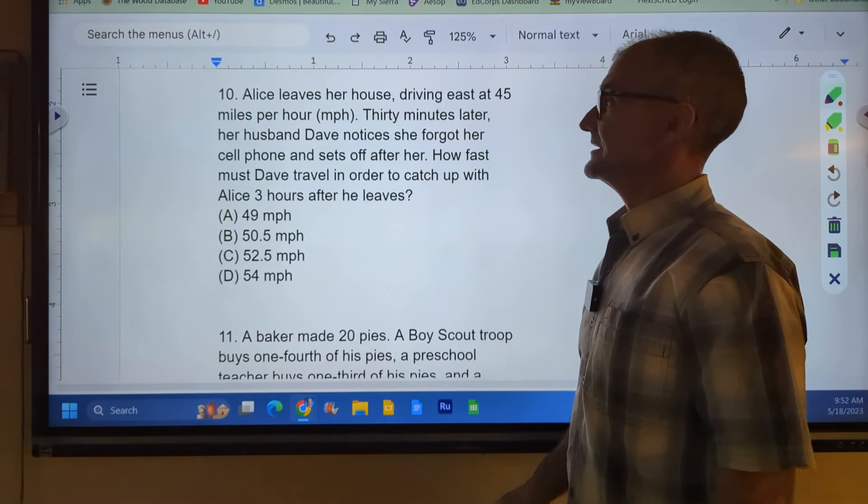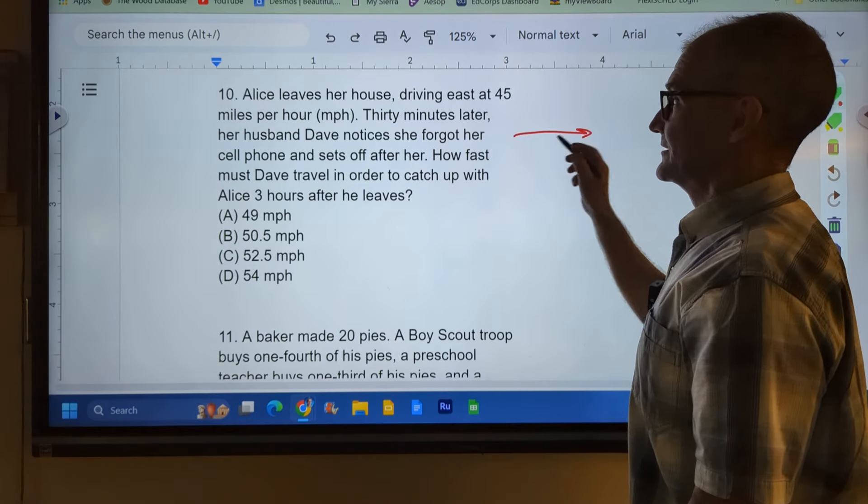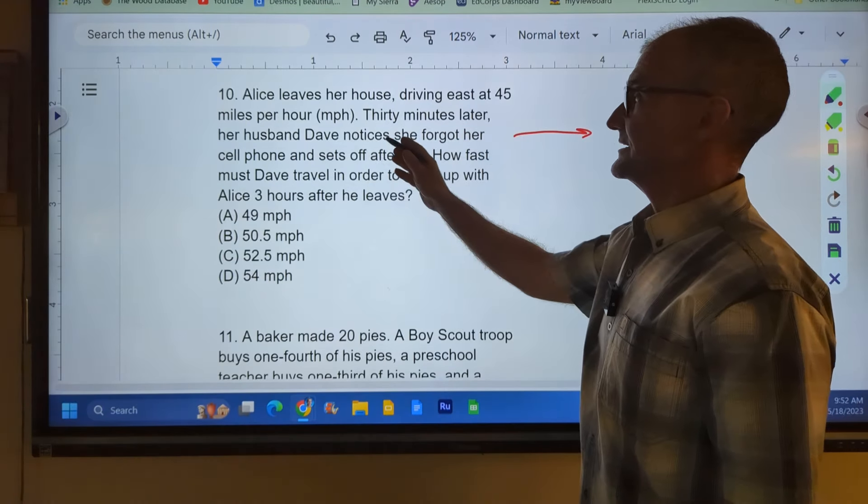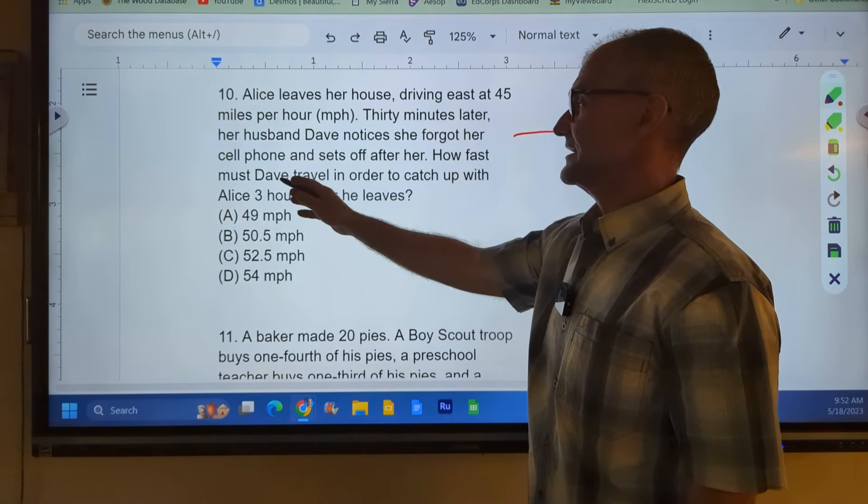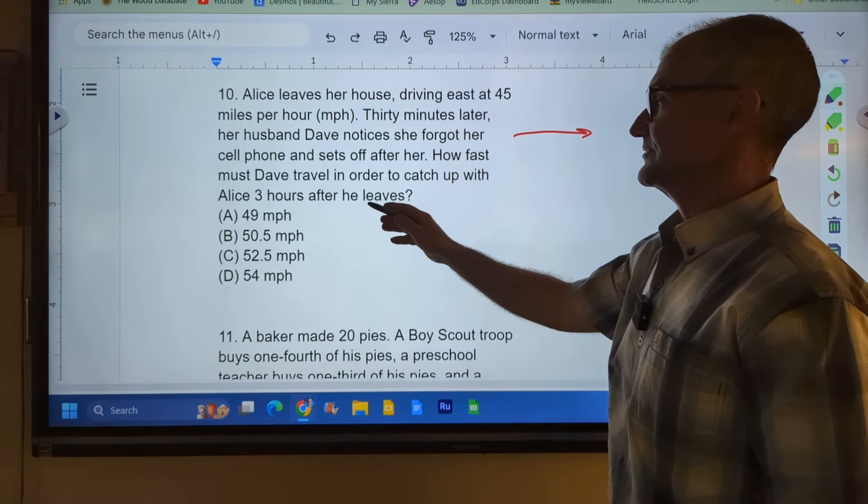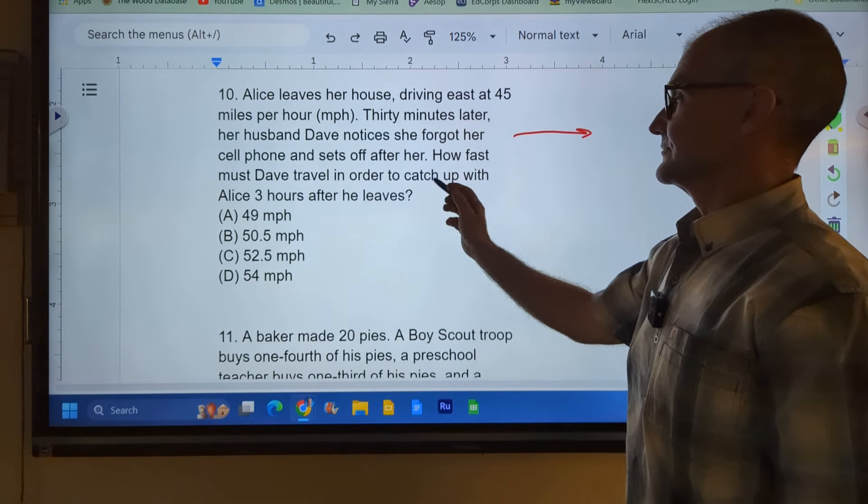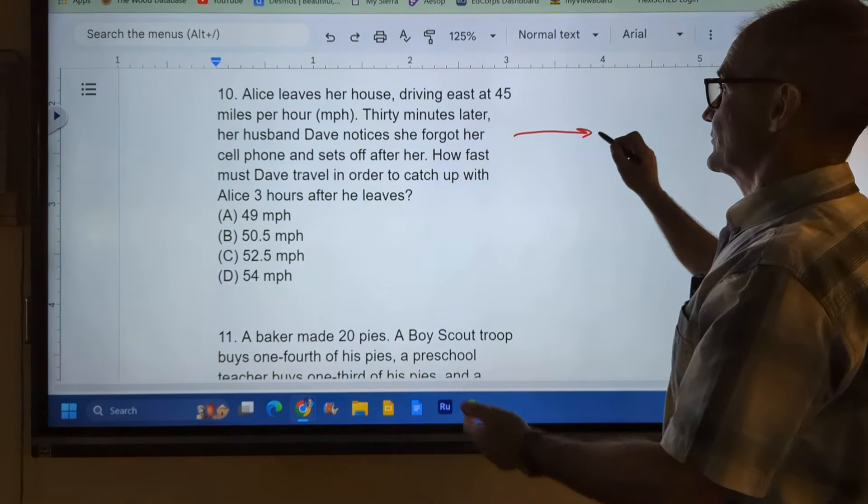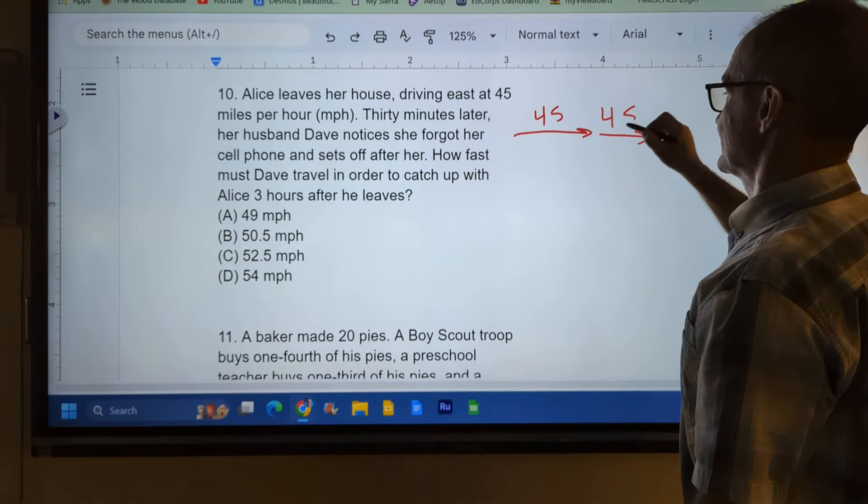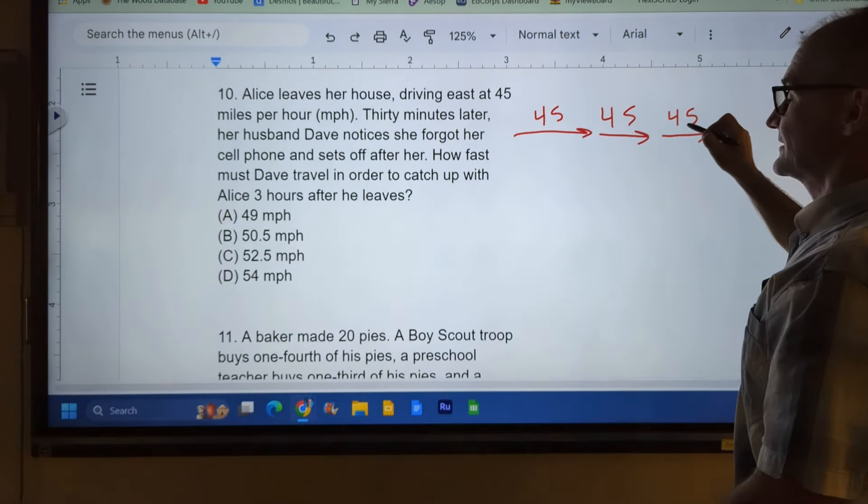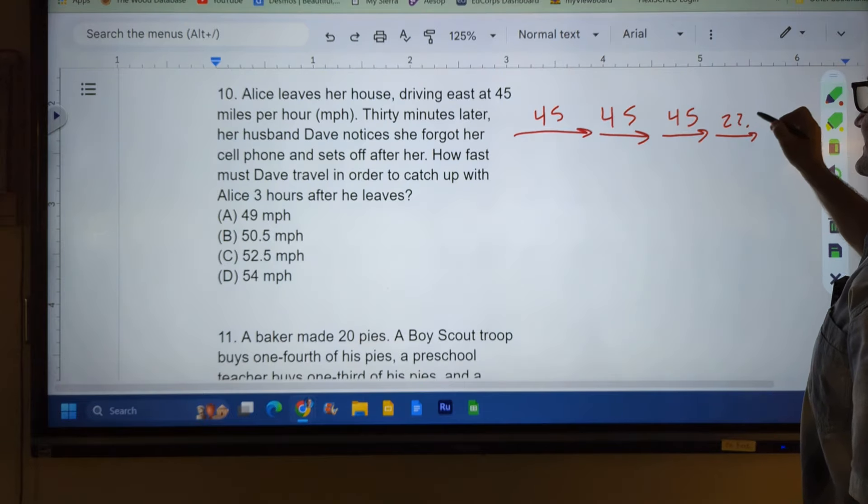All right, let's take a look at number ten here, and I think I'll end it right here. Alice leaves her house driving east at 45 miles per hour. Thirty minutes later her husband Dave notices she forgot her phone and sets off after her. How fast does Dave travel in order to catch up with her, three hours after he leaves? So she goes 45 in an hour. She's going to go 45, 45, 45, right?